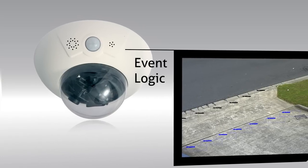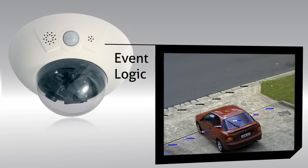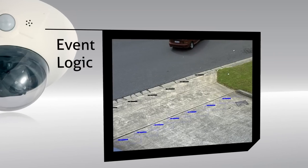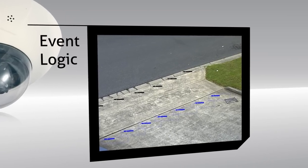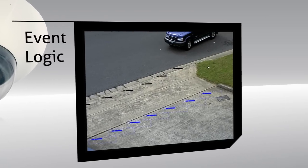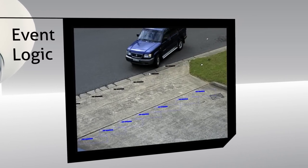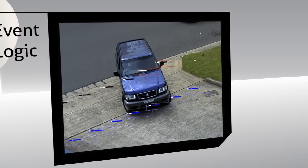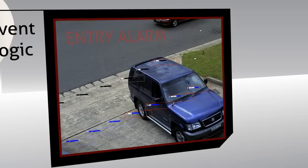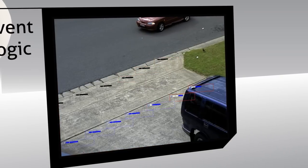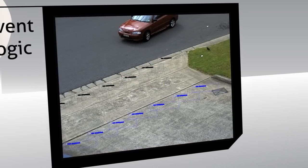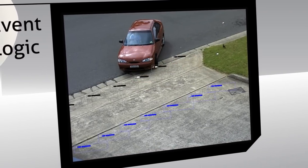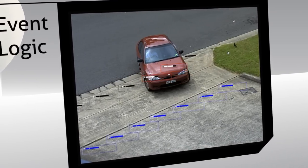EventLogic allows RemoteGuard to combine various events to only trigger alarms if a specific sequence of events occur. For example, combining two separate video motion areas allows an event to be triggered only when movement is detected in certain directions, for example, cars entering or cars leaving.